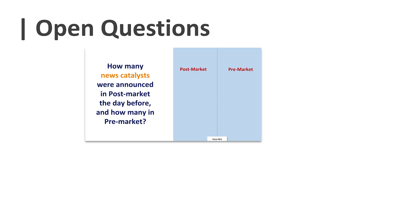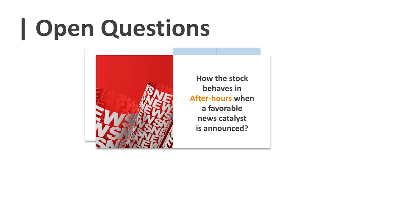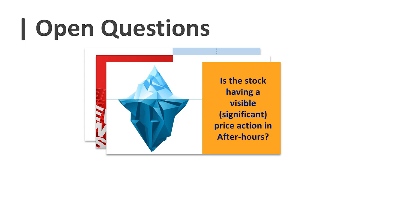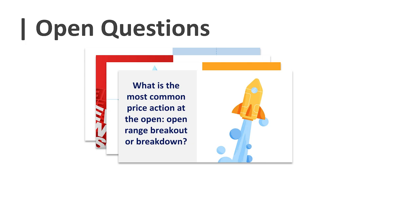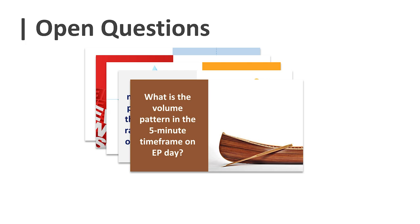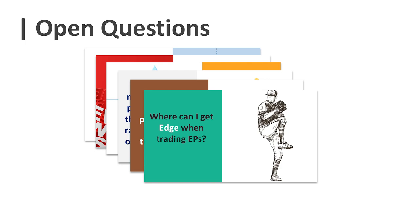Here's what the next presentation is about: pre-market, post-market, episodic pivot, 5-minute chart analysis. Here are the open questions covered later: How many news catalysts were announced in post-market the day before and how many in pre-market? How does the stock behave in after-hours when a favorable news catalyst is announced? Is the stock having a visible price action in after-hours? What is the most common price action at the open — is it open-range breakout or breakdown? What's the volume pattern in the 5-minute time frame on EP day? And where can I get edge when trading EPs?